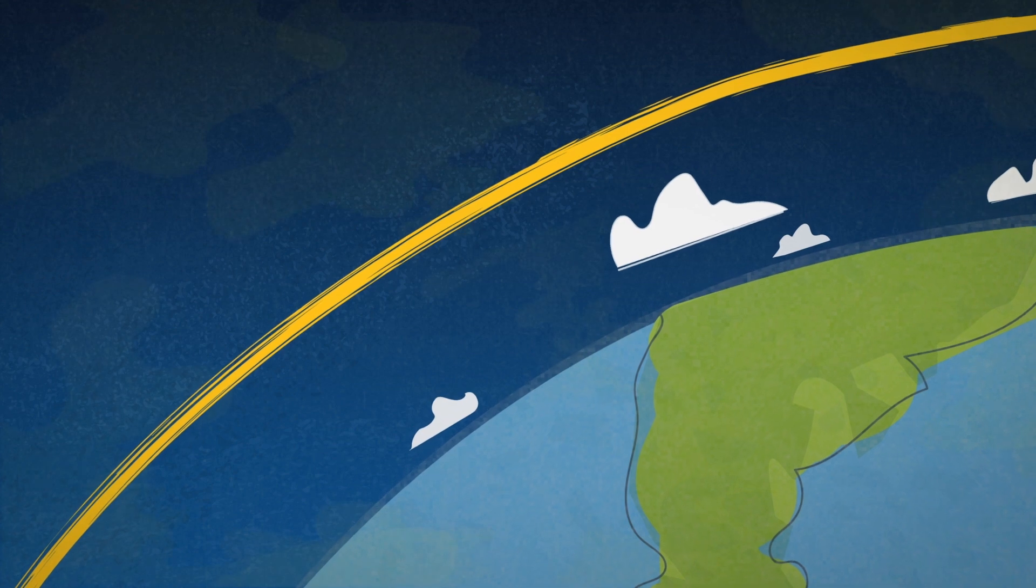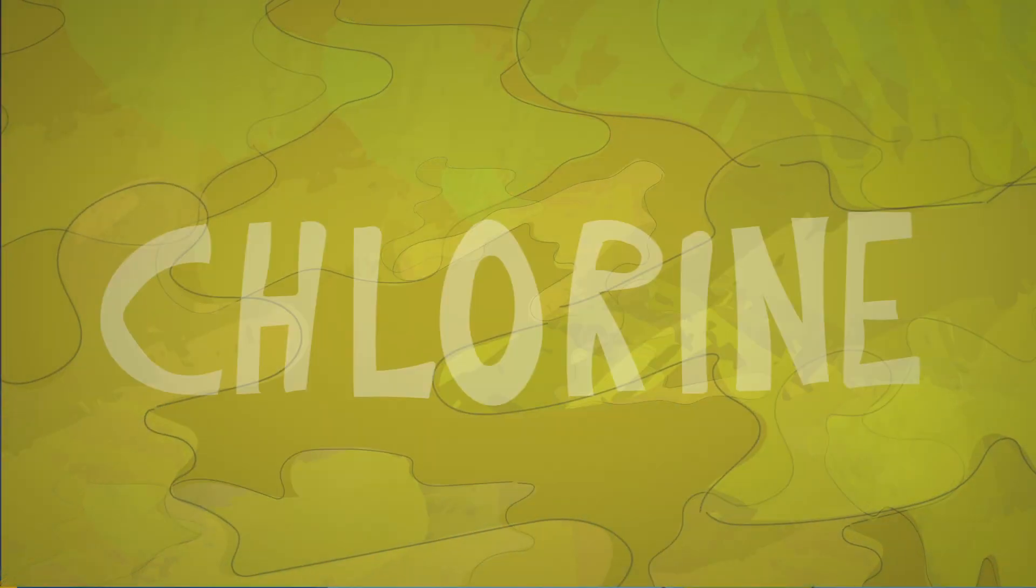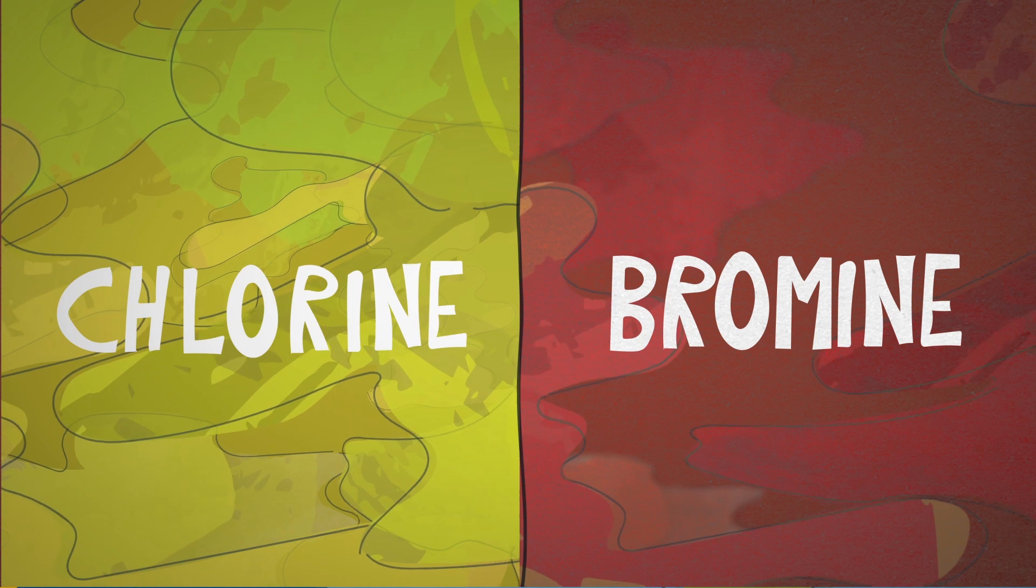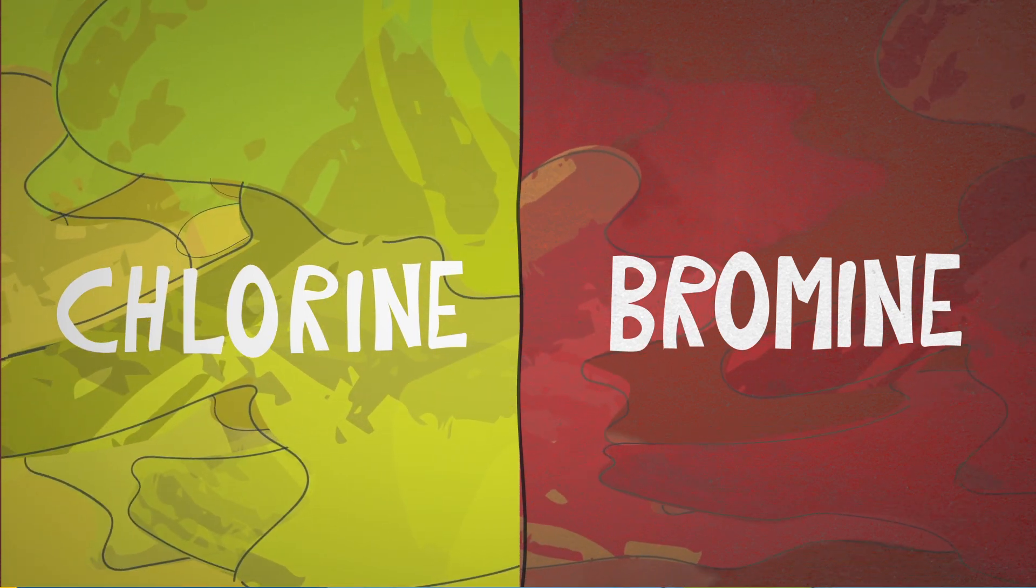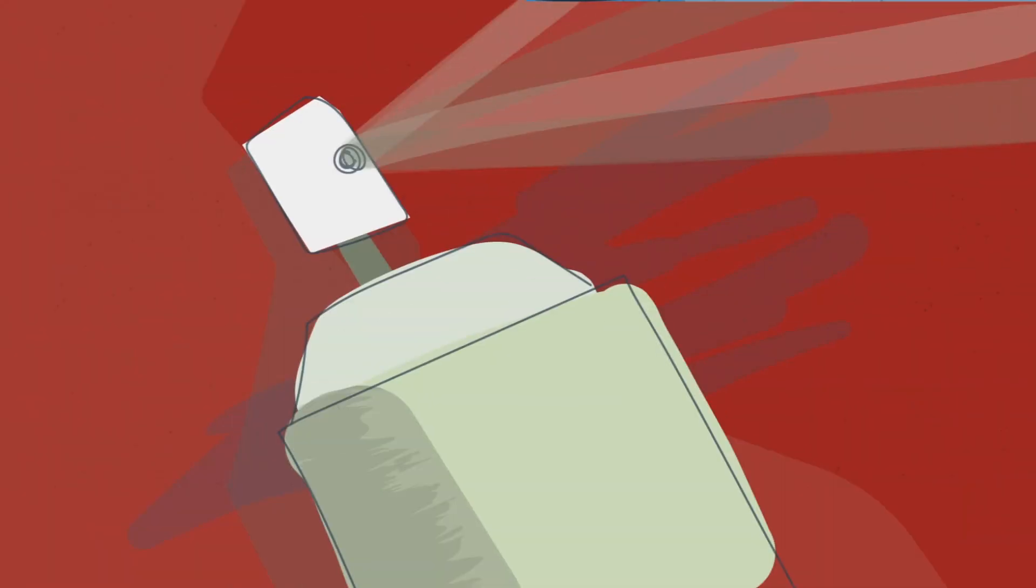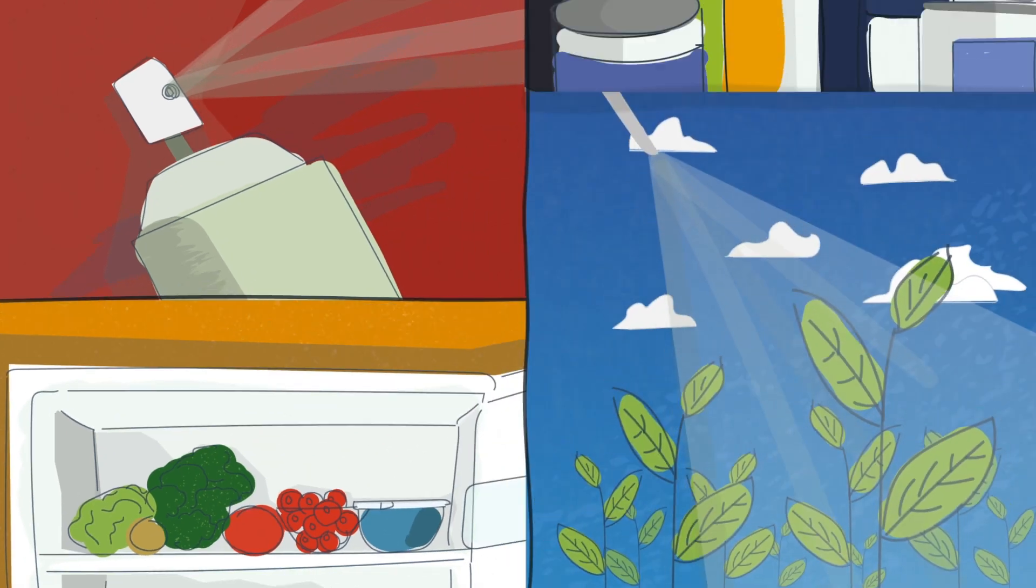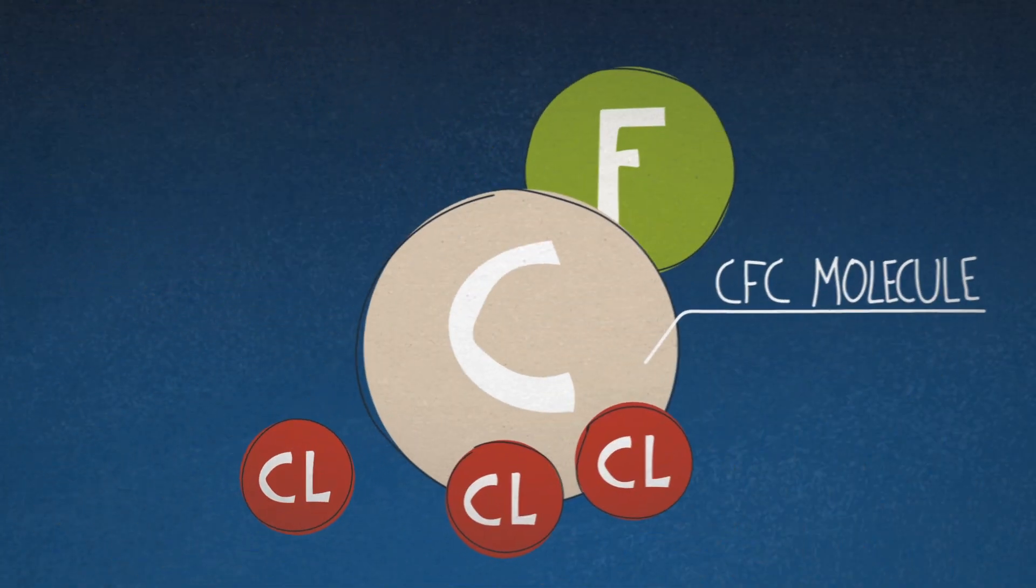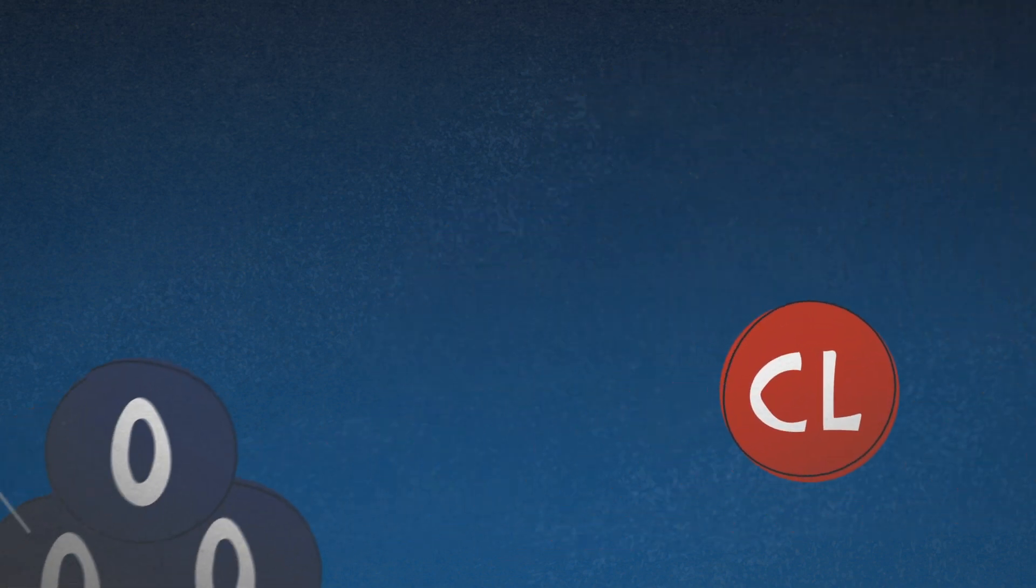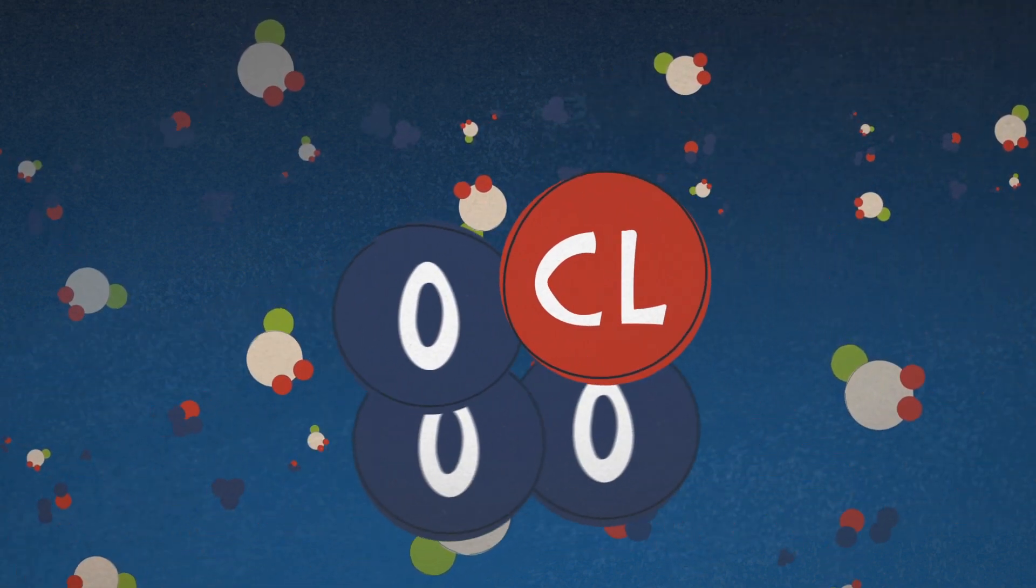For decades the ozone layer was attacked by invisible enemies: chlorine, bromine and other halogens, at the time commonly used in aerosol propellants, refrigerants, pesticides and solvents. Under ultraviolet radiation in the atmosphere, these substances break down and react with ozone,